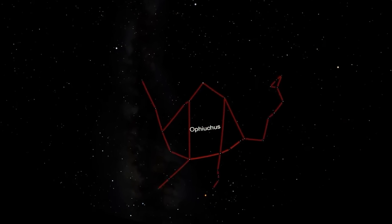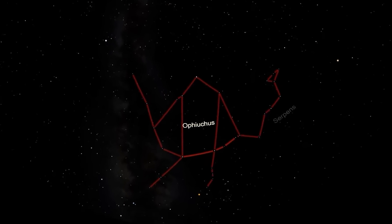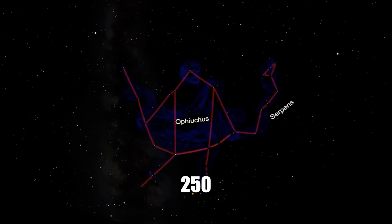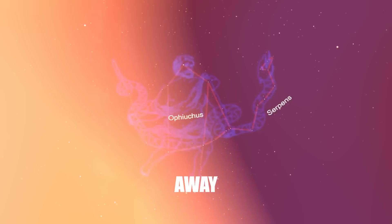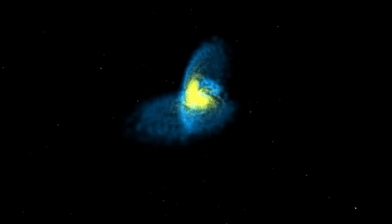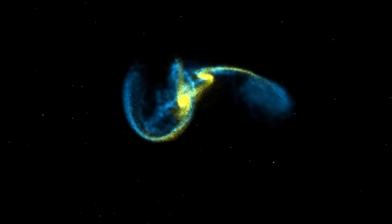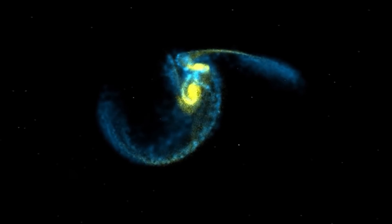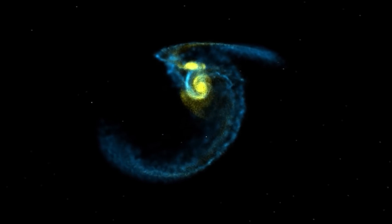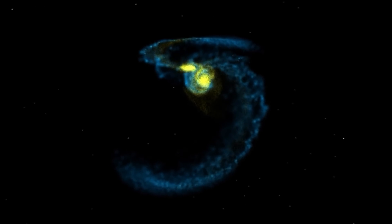Resting elegantly in the constellation of Serpens, ARP-220 lies roughly 250 million light-years away from our home planet. This might seem an unfathomable distance to us, but in the grand scheme of the universe, it's relatively close, making it one of the three closest galactic mergers to Earth.